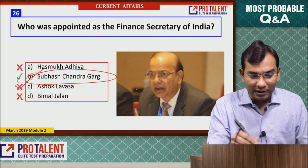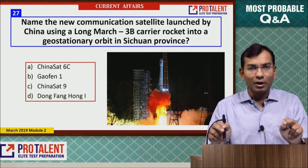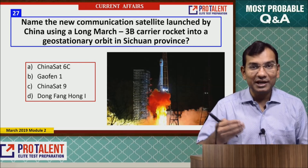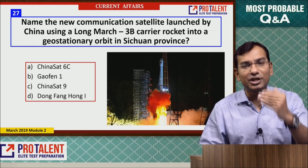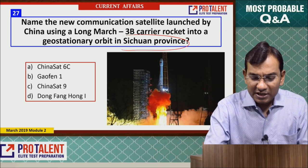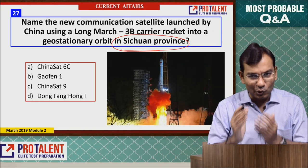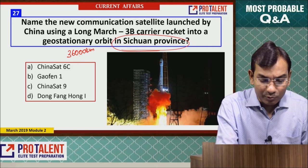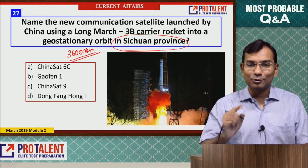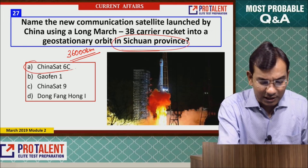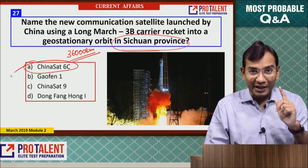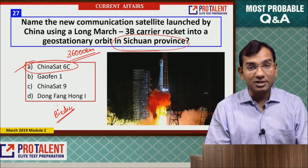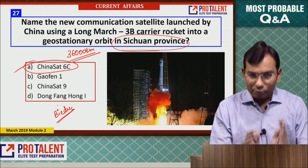The answer is Subhash Chandra Garg. Question 27: Name the new communication satellite launched by China using their Long March 3B carrier rocket to a geostationary orbit from Sichuan province. Geostationary orbit means placing it 36,000 km from Earth. This was China's ChinaSat satellite — note that China's Baidu navigation system and ChinaSat are different things.